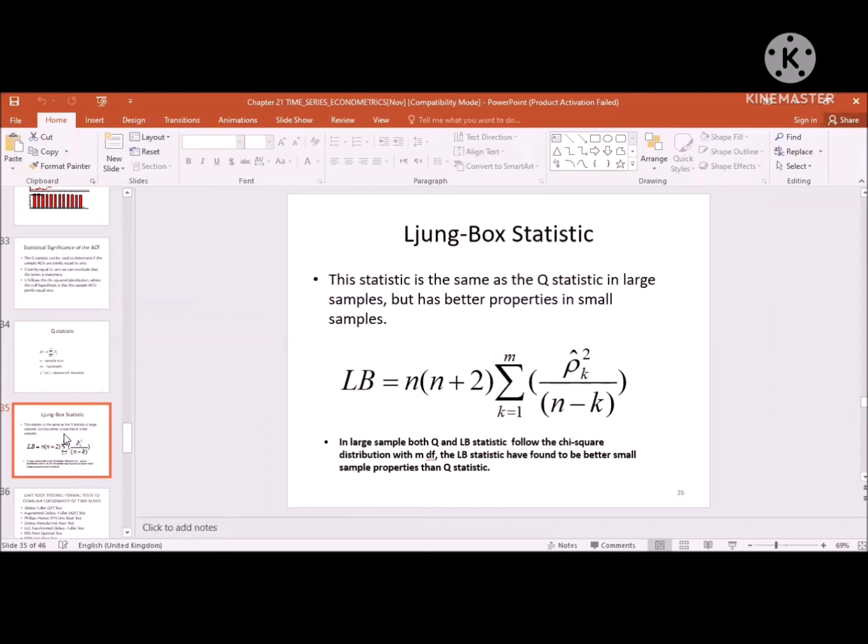Ljung-Box statistics is the same as the Q statistic in large samples. Large sample, both tests are the same, but it has better properties in small samples. If it is a small sample, then Ljung-Box is the same formula: N into N plus 2. For example, if we have 88 observations, so N is 88 into 88 plus 2, which is 90.